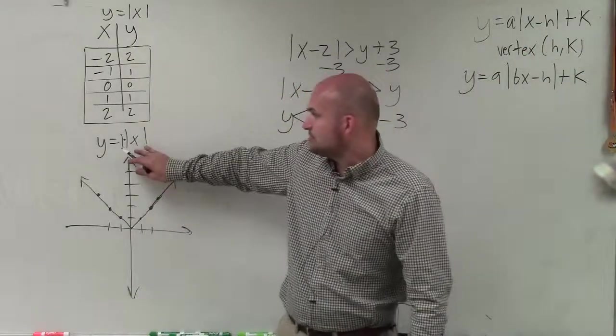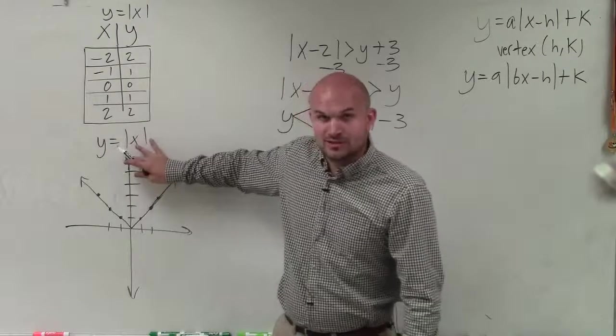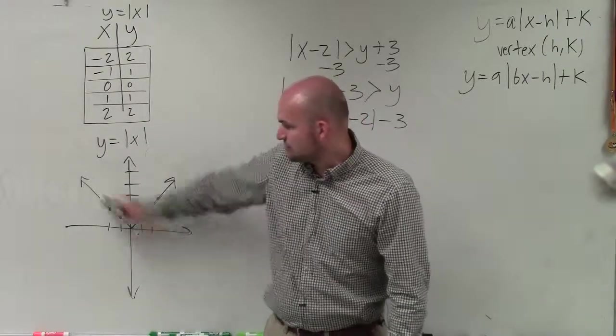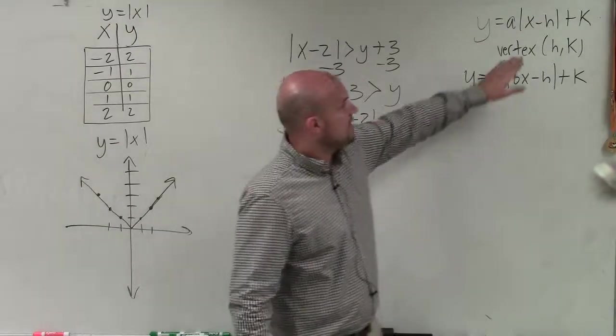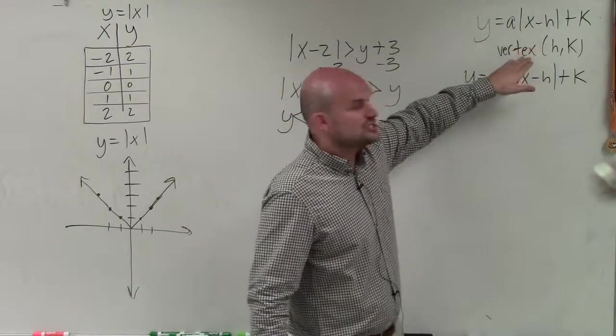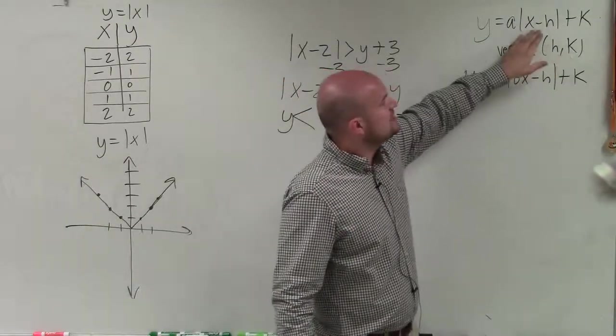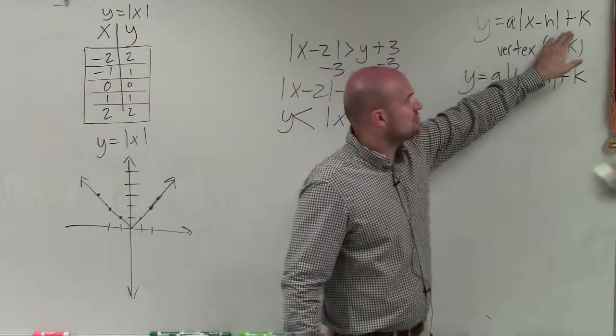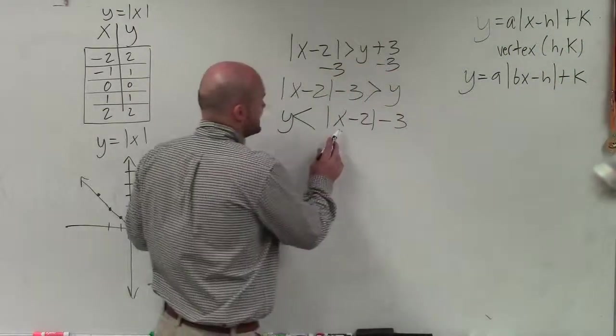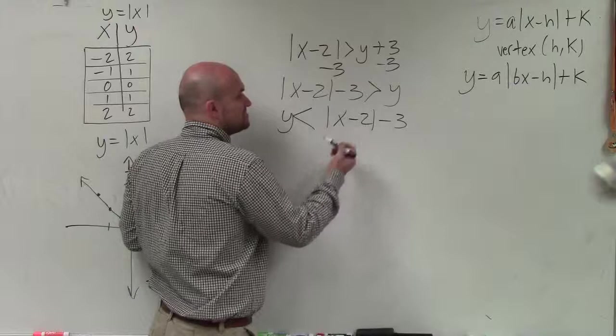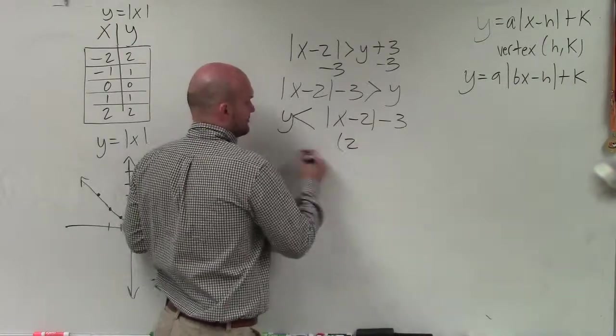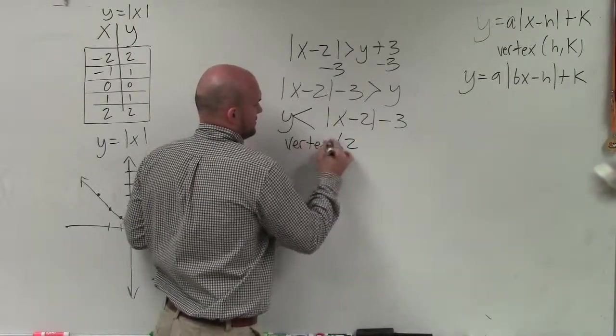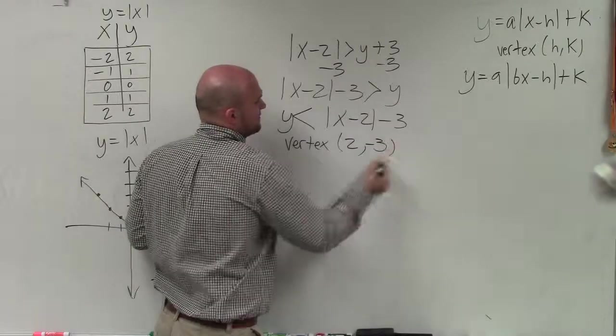Where here's the parent graph with no transformations, right? That has a vertex of 0, 0 going with the graph. Well, now when I have h and k, what that does is that changes my vertex to h, k. So it's x opposite of h plus k. So x opposite of 2. That means my h is 2, and my k is negative 3.